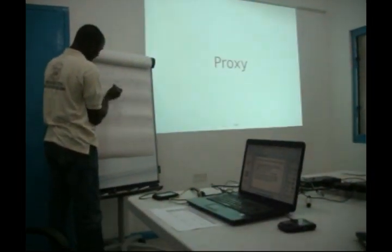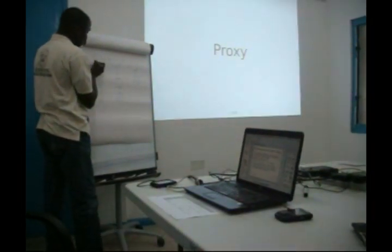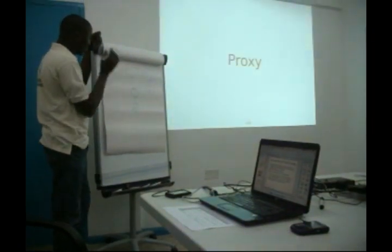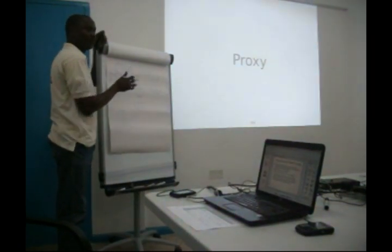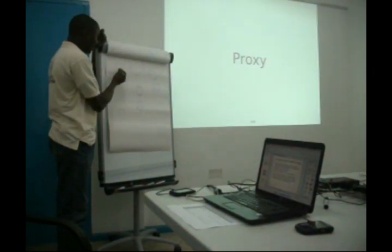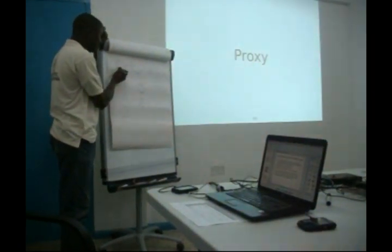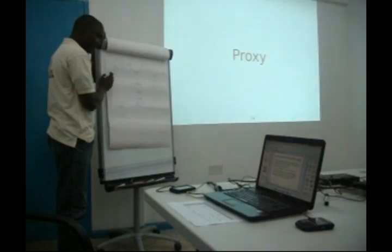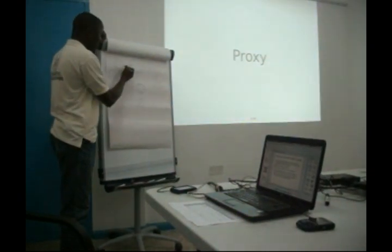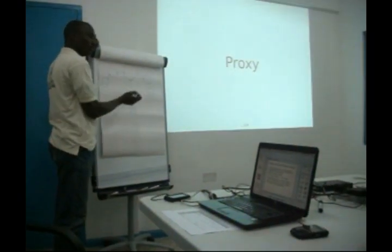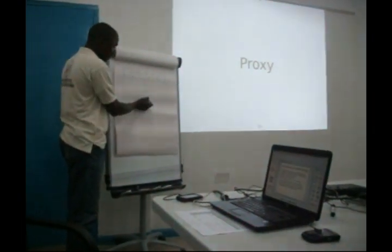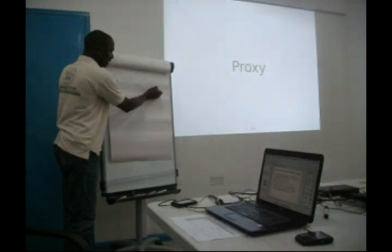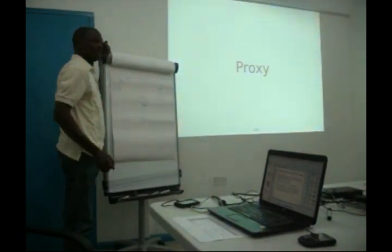This has 3 internet interfaces, this has 3. By default, for you to get connected, you are running DHCP on this. And it is saving your network, your default gateway to the internet — you are running DHCP on this.